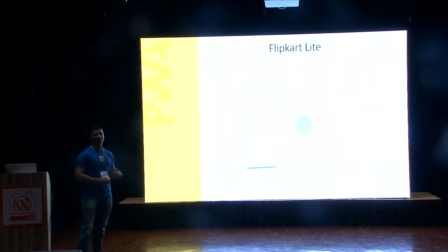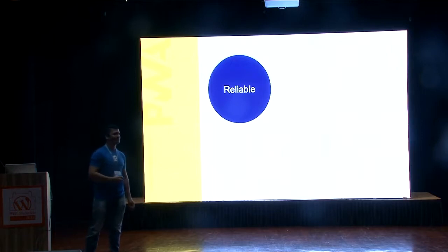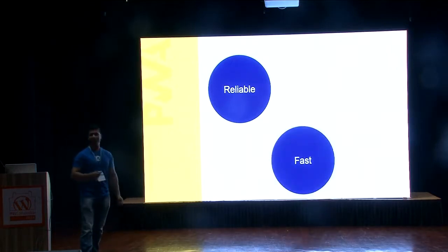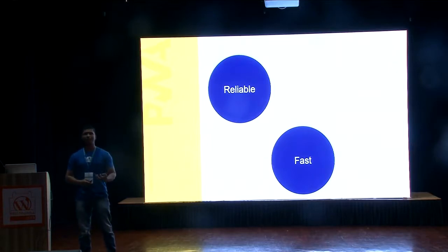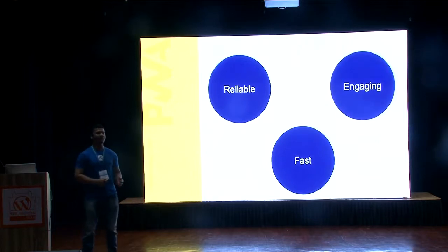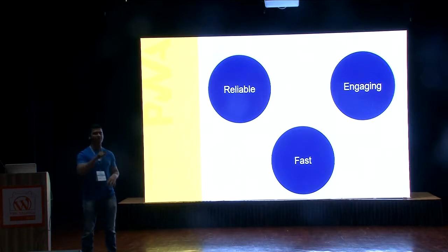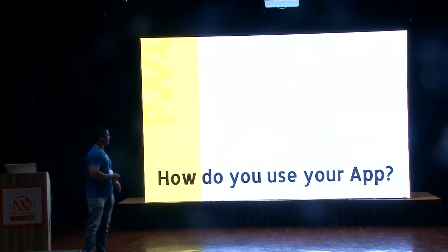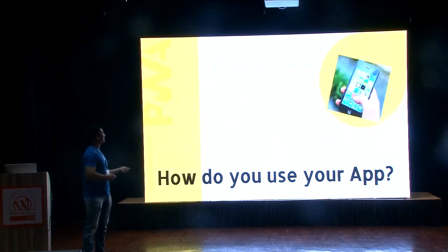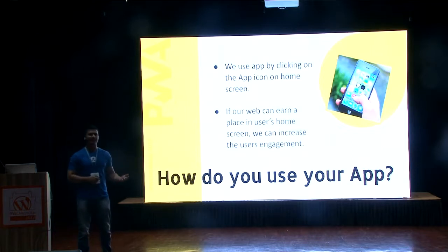The first requirement of PWA is that it needs to be reliable, which means it needs to work offline. It needs to be fast — at many places we have poor network connectivity, so it should work with some caching strategy where we cache the data and show it from the cache. And it needs to be engaging — even if the user has closed the application, he should be able to open it when he gets a notification. If we can have our PWA earn a place on the user's mobile home screen, I think we have done a good job.